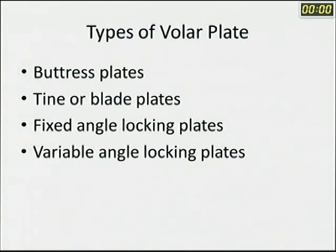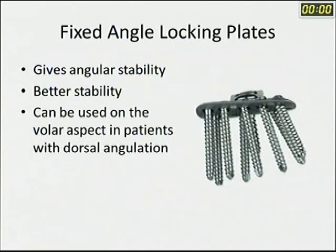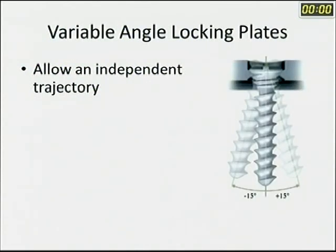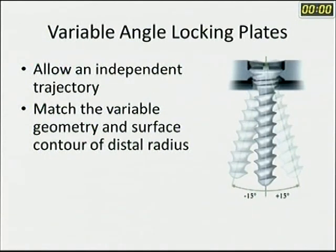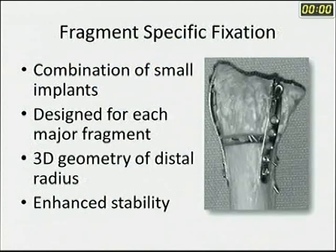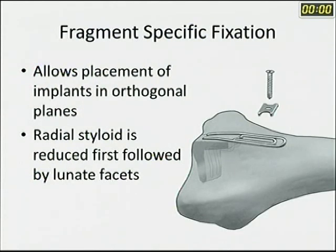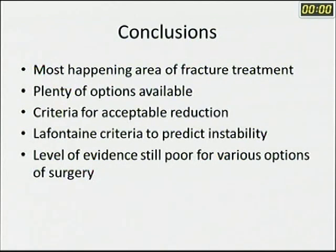For volar plating, various plate types are available. The current trend is variable angle distal fixation, which allows independent screw trajectories and better anatomical matching, though it is more prominent and can cause soft tissue problems. The upcoming approach is fragment-specific fixation, which allows implant placement in orthogonal planes and reduction of individual fragments. In summary, distal radial fractures are one of the most active areas in fracture treatment, with many options available. Clinicians should know the criteria for acceptable reduction and predicted instability, though the current level of evidence remains poor.